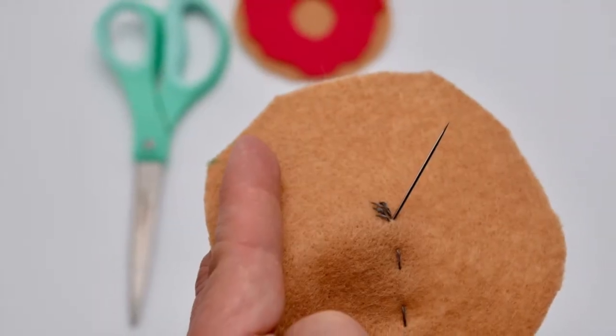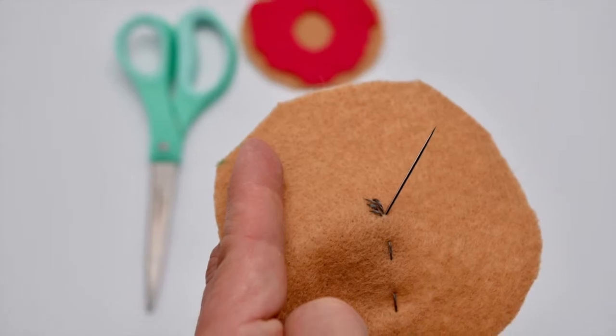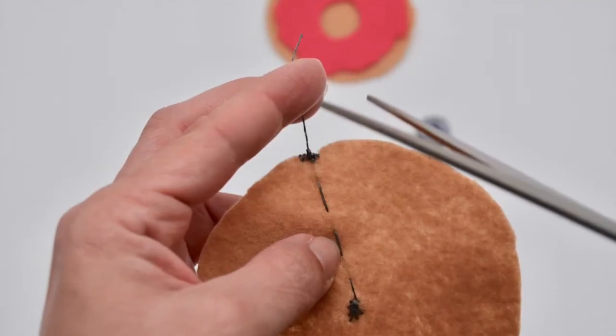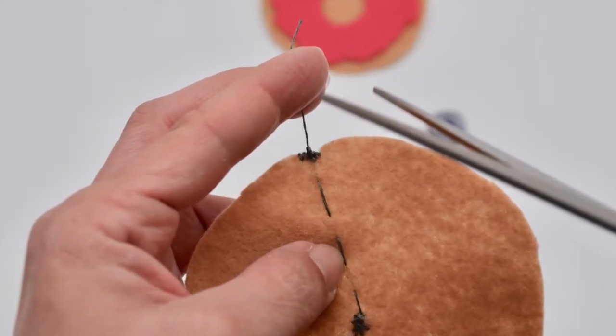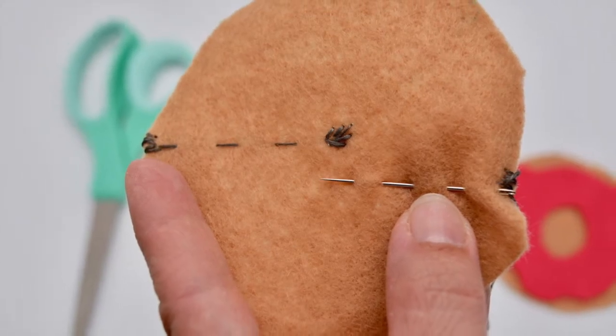Once you get to the center, you're going to make like a flower type pattern so that you have a conductive spot to bridge the circuit. You want to make sure you tie the loose thread because you don't want to short your circuit.